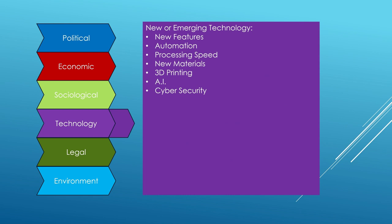Next, we can look at technology, which is a bane for many companies. Here, we're considering all of the new and emerging technologies that may help or hinder our ability to make the change or the way that we do that change, such as new features appearing in existing software, automation, processing speed of data and information, the availability of new materials, 3D printing, artificial intelligence, and cyber security. All of these need to be taken into consideration. Is somebody out there doing it bigger, better, faster, and cheaper than you? You may not want to implement this new change without considering what is available already and how you may be out-competed by somebody else.